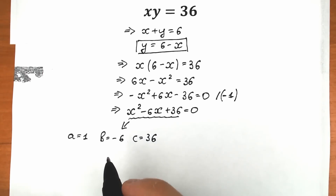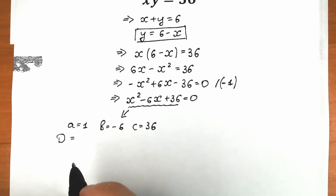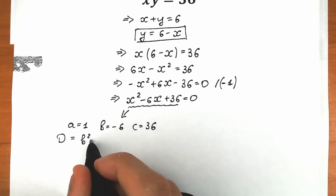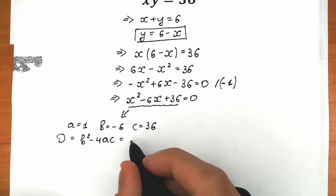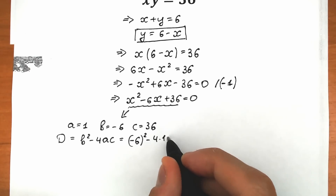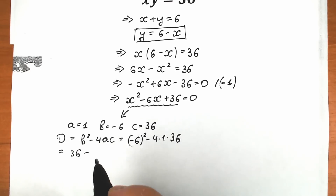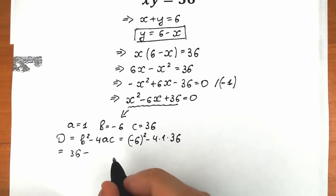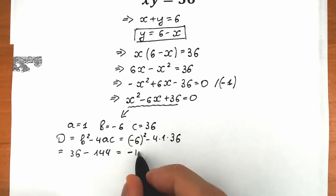The first approach uses the discriminant: D equals b squared minus 4ac. So D equals (minus 6) squared minus 4 times 1 times 36, which equals 36 minus 144, and this equals minus 108.